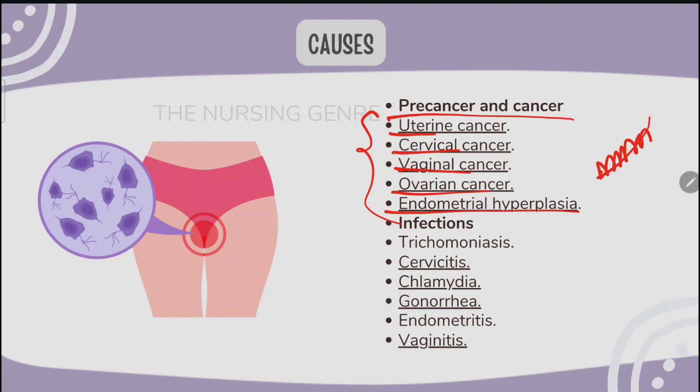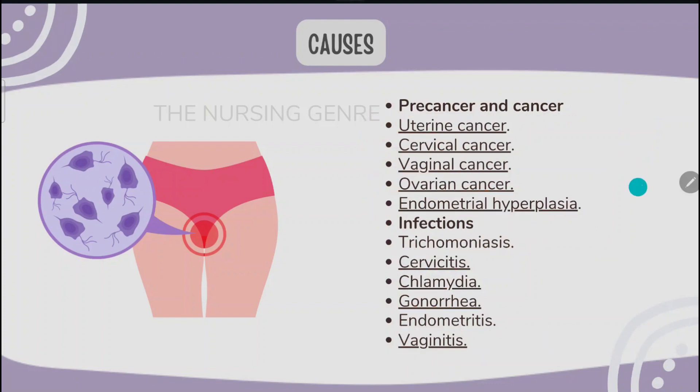Infections are another cause of abnormal uterine bleeding, including trichomoniasis, cervicitis, chlamydia, gonorrhea, endometritis, and vaginitis. These infections increase the chances of abnormal uterine bleeding.